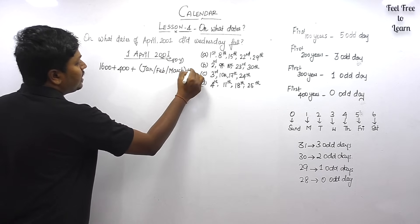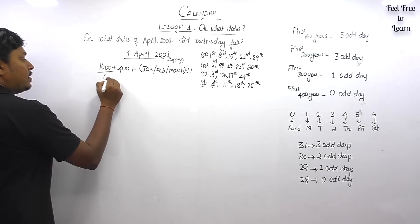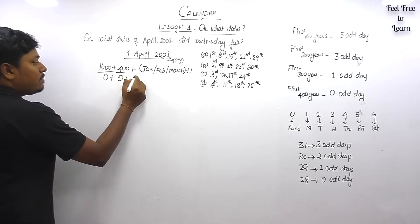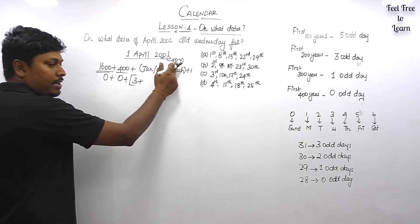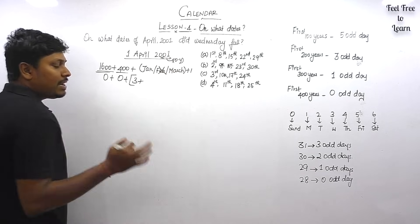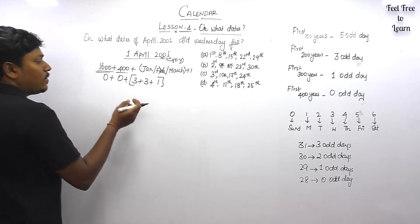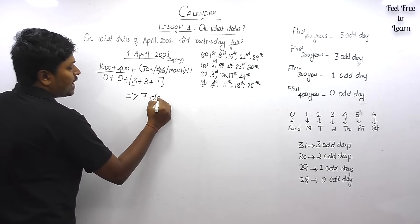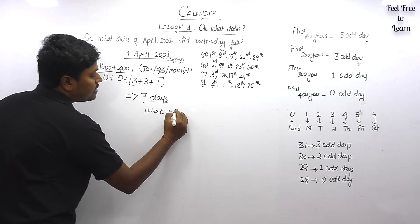For the first 1600 years we have zero odd days. For the next 400 years, again zero odd days. For January we have 31 days, giving three odd days. Because it's an ordinary year, February has zero odd days. March has 31 days, giving three odd days. For first April, the date value is one. Adding all values: 3 plus 3 is 6, plus 1 is 7 — so we have seven days total.